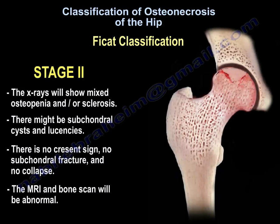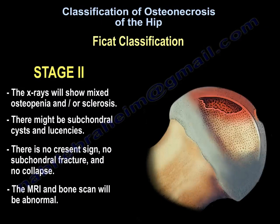Stage two: the x-ray will show mixed osteopenia and/or sclerosis. There might be subchondral cysts and lucencies. There is no crescent sign, no subchondral fracture, and no collapse. The MRI and bone scan will be abnormal.